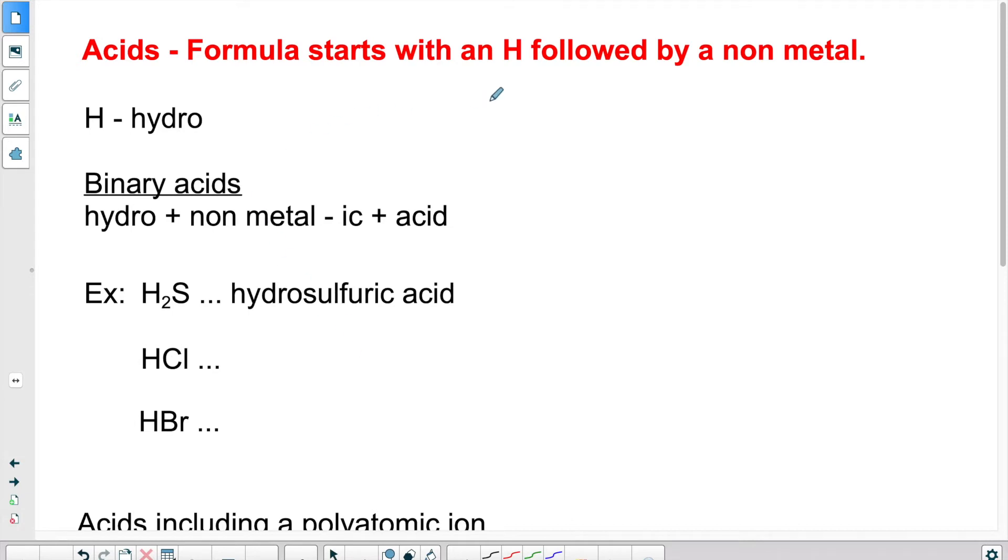We know that acids normally start with an H, and then they're followed by a nonmetal. It could happen, if you recall, that you will have a bunch of atoms, and it will end with COOH. You've got the two types of acids. Let's stick to the basic ones for now.